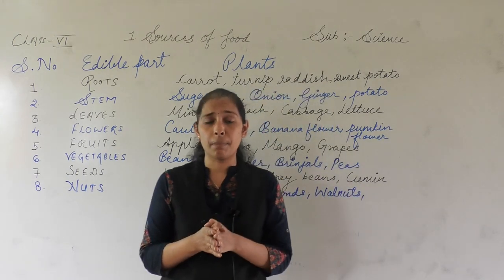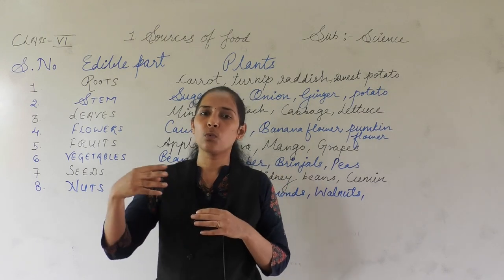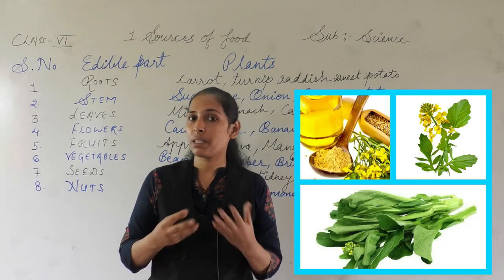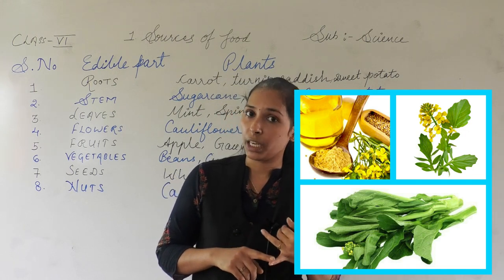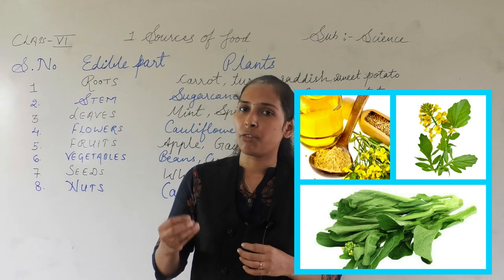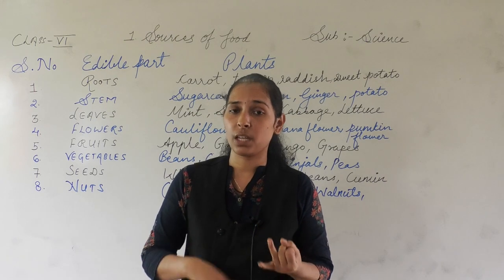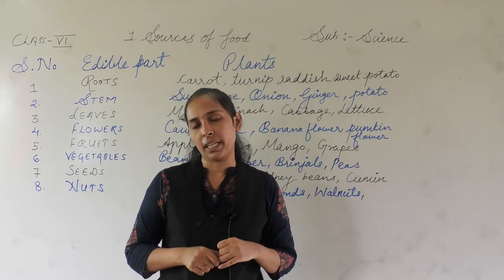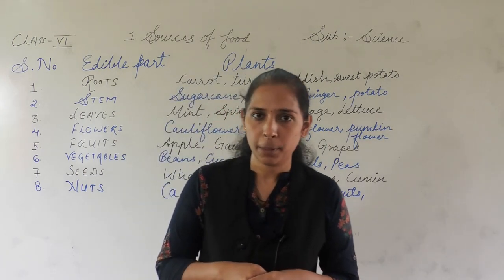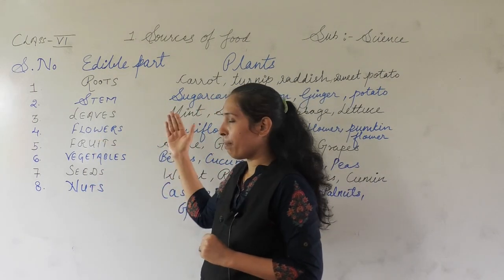There are certain plants where more than one part is eaten. For example, take the mustard plant — its seeds give us oil, and the remaining part of the mustard plant can be used to make a vegetable. So we can use the seeds as well as the leaves of the mustard plant. Like this, there are certain plants where more than two parts can be used.